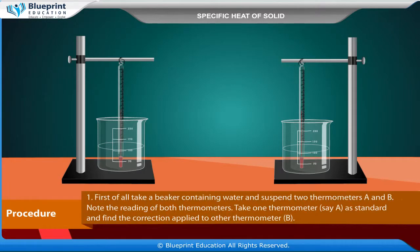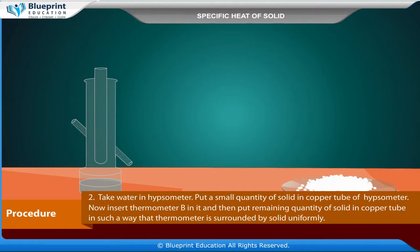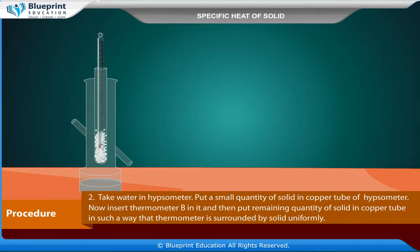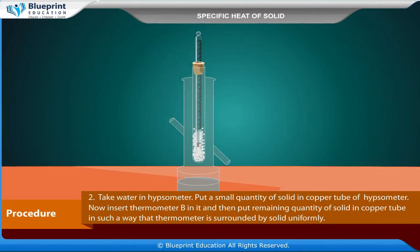Procedure: First, take a beaker containing water and suspend two thermometers A and B. Note the reading of both thermometers. Take thermometer A as standard and find the correction applied to thermometer B. Take water and hypsometer; put a small quantity of solid in the copper tube of the hypsometer. Insert thermometer B in it, then put the remaining quantity of solid so that the thermometer is surrounded by solid uniformly.